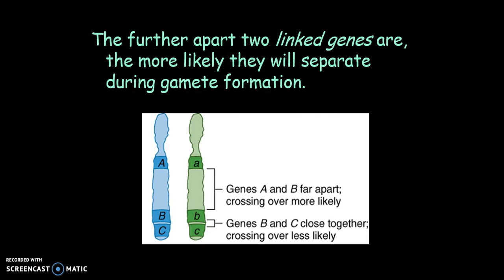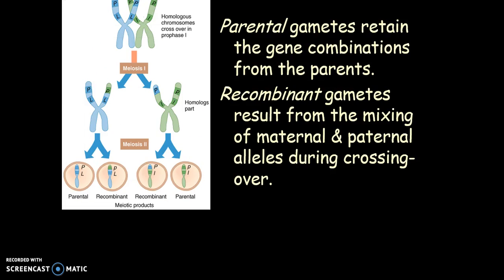The further apart two linked genes are, the more likely they will separate during gamete formation. That's because there's more space between the two genes, and therefore a greater likelihood that they will be separated by crossing over. Parental gametes retain their gene combinations from parents. Recombinant gametes result from the mixing of maternal and paternal alleles during crossing over. Parental allele combinations occur when crossing over fails to separate parental alleles, so they're passed together into the gametes. Recombinant allele combinations occur when crossing over separates parental alleles, mixing them into new combinations. If the genes are not linked, equal numbers of parental and recombinant allele combinations will occur. But if the genes are linked, gametes with parental allele combinations will occur more frequently than recombinant ones.